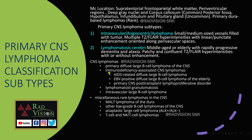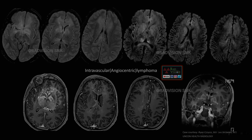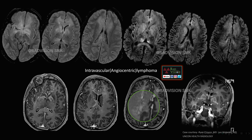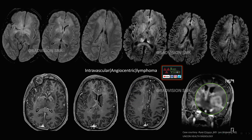Two important lymphoma variants: intravascular or angiocentric lymphoma shows a lesion hyperintense predominantly in the capsulo-ganglionic region with patchy restricted diffusion on DWI. On IV contrast, there is punctate or linear enhancement along the vessels and enhancement along the perivascular spaces. This is classical of intravascular angiocentric lymphoma.